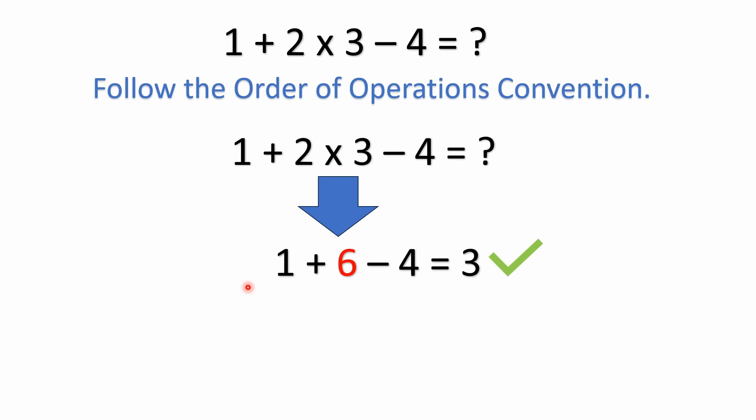First of all, we need to follow the order of operations convention. I've covered that in a few other videos, but basically here, in this case, multiplication always has precedence over addition and subtraction. We don't have any parentheses, we don't have any exponents, but we do have multiplication. And remember, multiplication is just shorthand for addition, so we need to do that first.